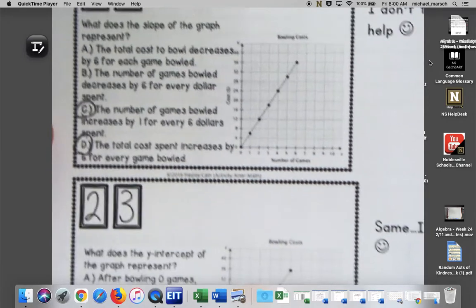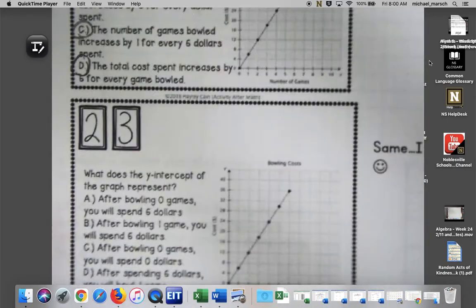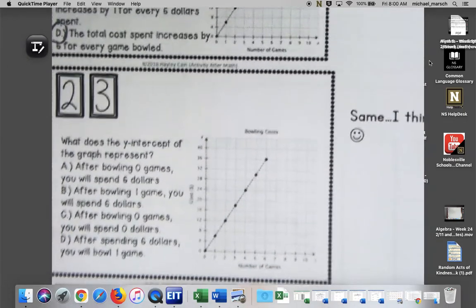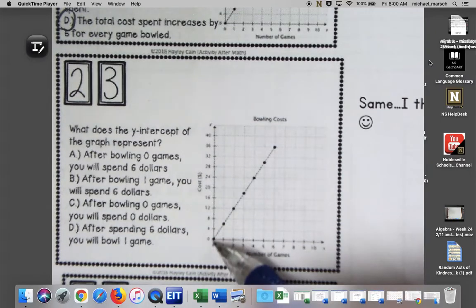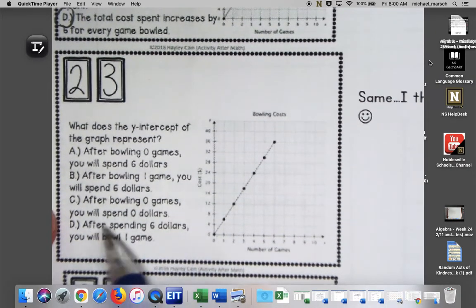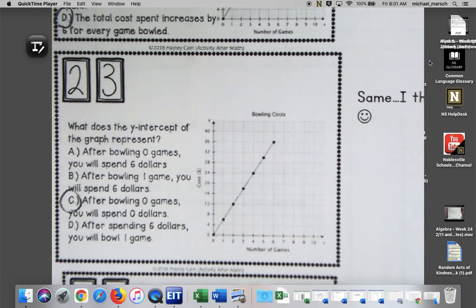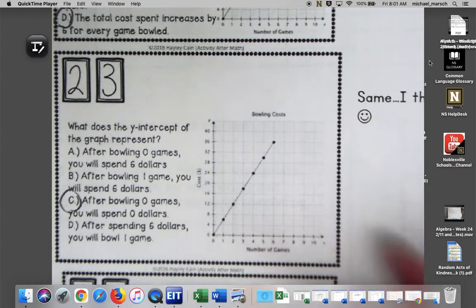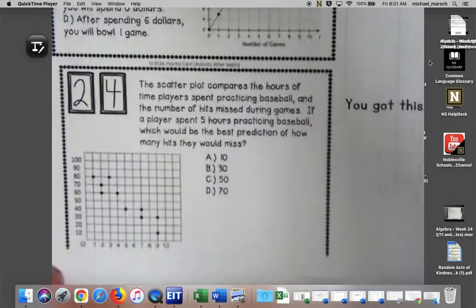What does the y-intercept of the graph represent? You really should not have needed help on this. It's at zero, zero. So after bowling zero games you will spend zero dollars. I think that's pretty obvious, right? If you haven't bowled, you haven't spent anything, and it doesn't look like maybe this bowling alley charges anything for a shoe rental.